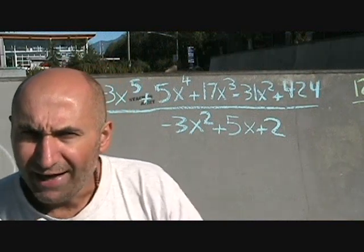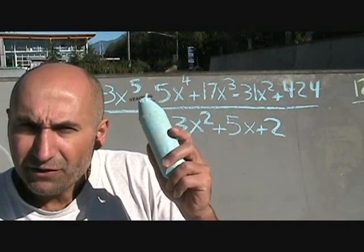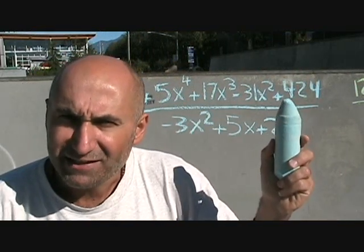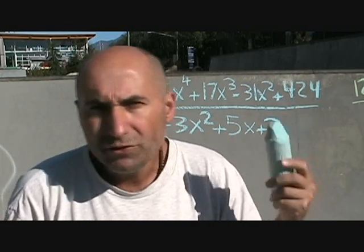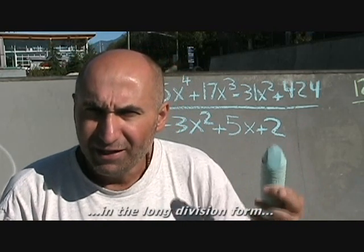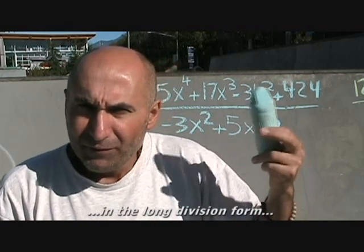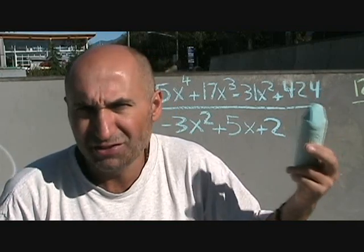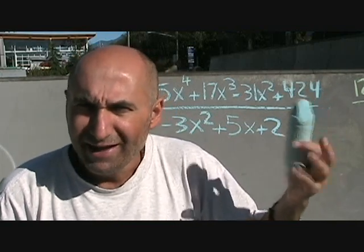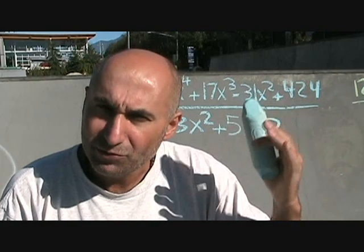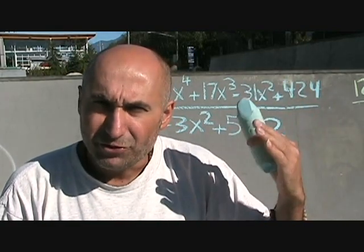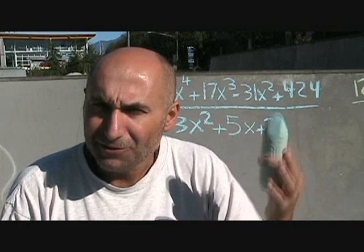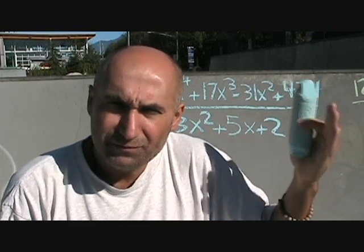What we have is all the X's in descending order, but we're missing the X to the power of one. So when we lay out the division statement, we're going to put in zero X to the power of one — which is zero X — just as a place marker, so when we're doing the long division we don't accidentally add unlike terms.